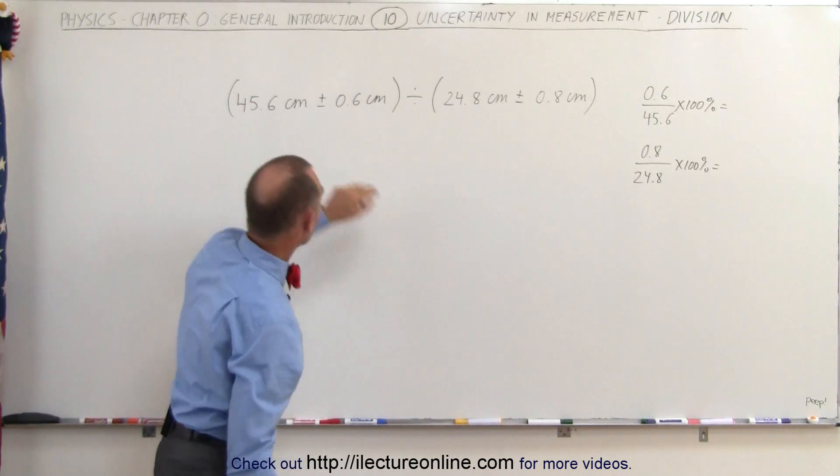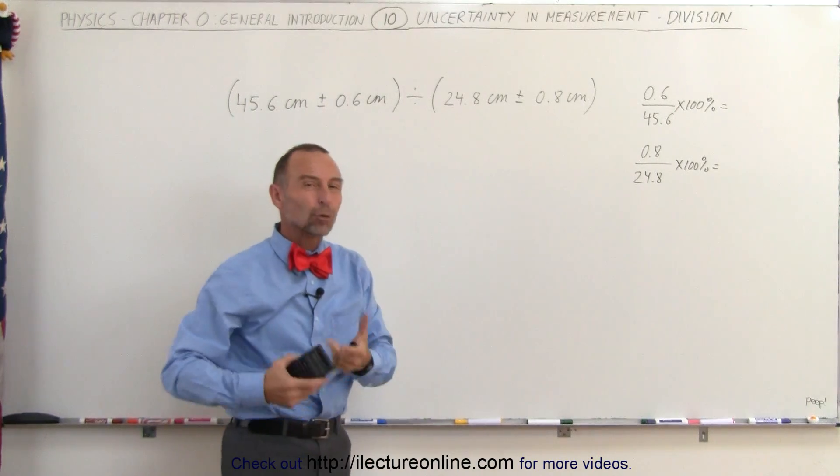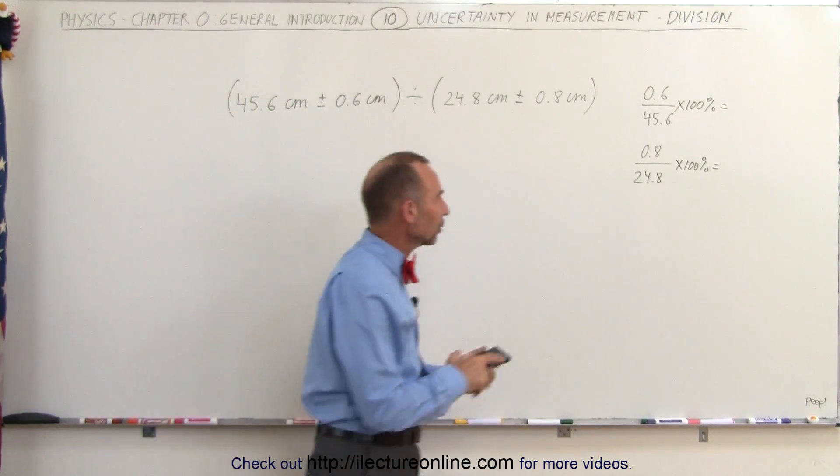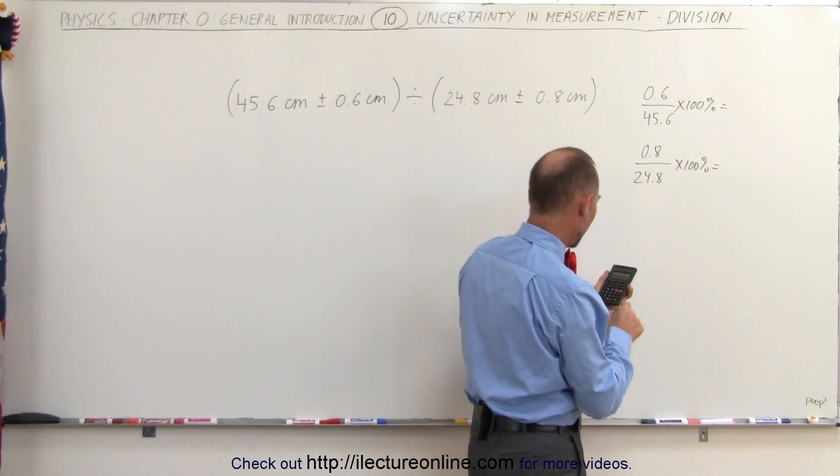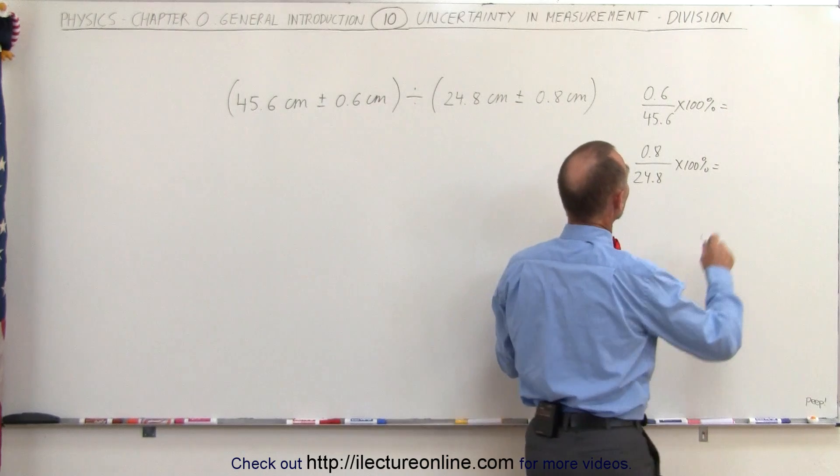Of course, when you divide this by this, it's basically taking the ratio between two measured values. So we have 0.6 divided by 45.6, and that would be 1.3%.